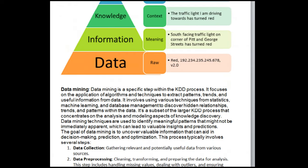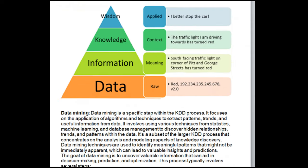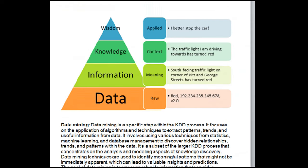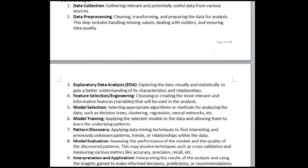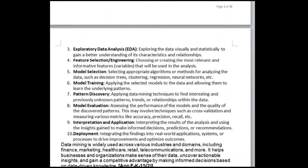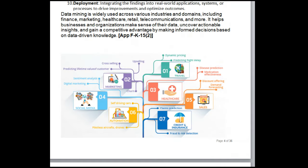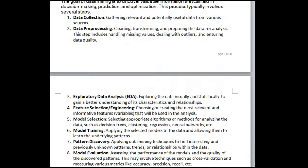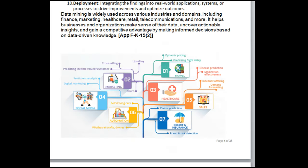Cross-Industry Standard Process for Data Mining (CRISP-DM) is a reliable data mining model consisting of six phases. It is a cyclical process that provides a structured approach to data mining. The six phases can be implemented in any order, but sometimes require backtracking to previous steps. Phase 1 is Business Understanding — framing the business problem, setting goals, and discovering important factors that will help achieve those goals.